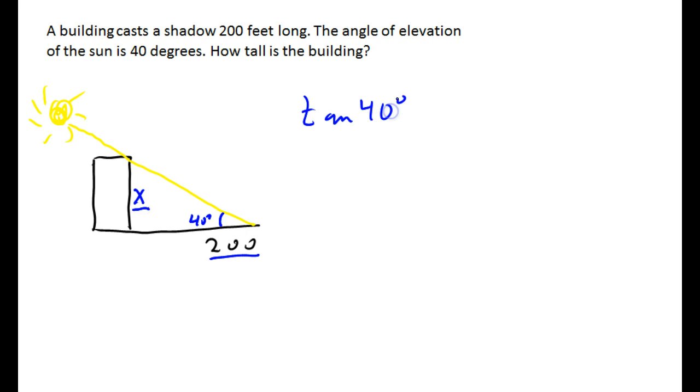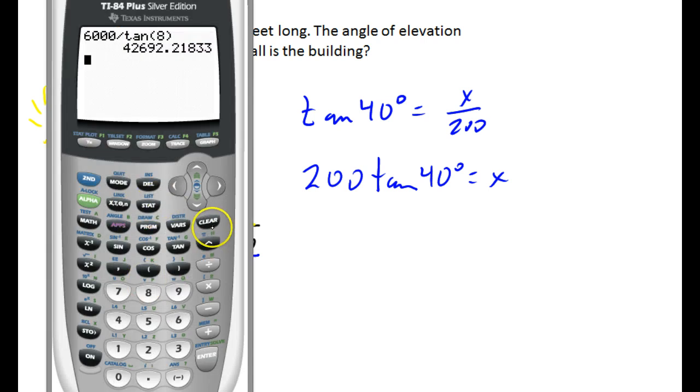The tangent of 40 degrees is X over 200. 200 tangent 40 is X. Bring up the calculator. 200 tangent 40. And we get that the building is 168 feet tall.